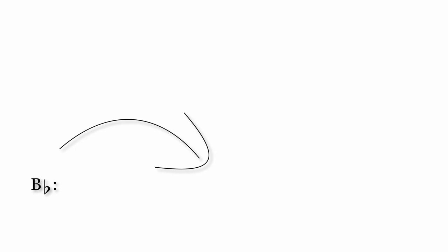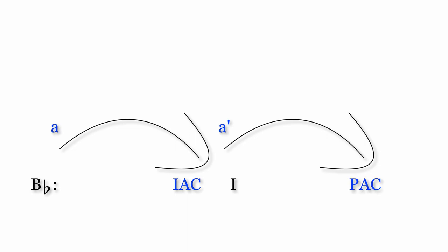In this example, the first phrase ended with an imperfect authentic cadence in B-flat major. The second phrase began on tonic with the same melody, and ended with a perfect authentic cadence in B-flat major. Together, these phrases form a parallel sectional period.